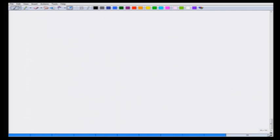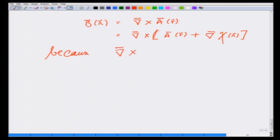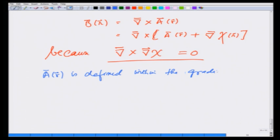In a similar manner, when I have magnetic field B as curl of A(r), I can also write this curl of A(r) plus gradient of some other quantity, let us call chi(r), because curl of a gradient is always 0. And therefore, A(r) is defined within a gradient of a scalar field. So, just like the potential V had an arbitrariness of up to a constant, A(r) also has an arbitrariness up to the gradient of a scalar field.